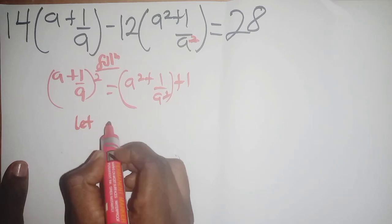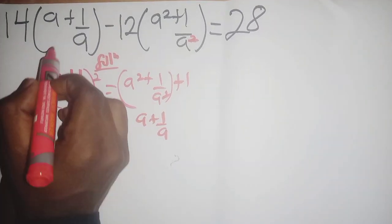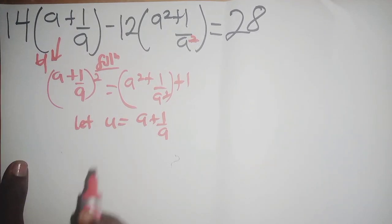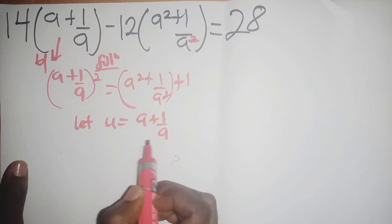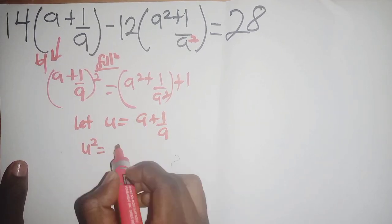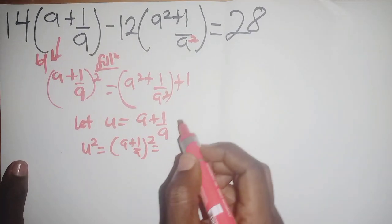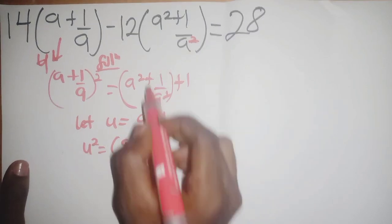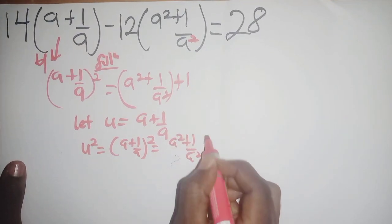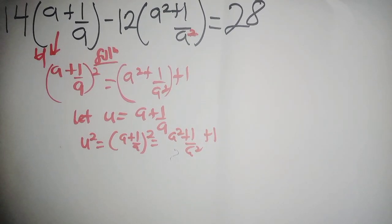What I'm going to do is let a variable u equal to a + 1/a. This means that u² equals (a + 1/a)², which is basically a² + 1/a² + 2, so u² = a² + 1/a² + 2.